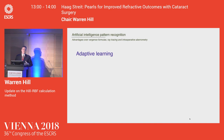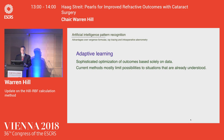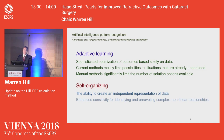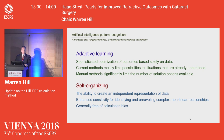Why is this any better than just a regular vergence formula? It's a sophisticated method of optimizing outcomes based entirely on data. Current methods really limit possibilities to what we already understand. With artificial intelligence, we can develop relationships within the calculation process that were previously unknown. It's self-organizing and has enhanced sensitivity for identifying complex, nonlinear relationships. The human eye is without question a Chinese puzzle — there are millions of combinations of axial length, central corneal power, and anterior chamber depth, and a simple two-dimensional regression algorithm is not going to work for that.